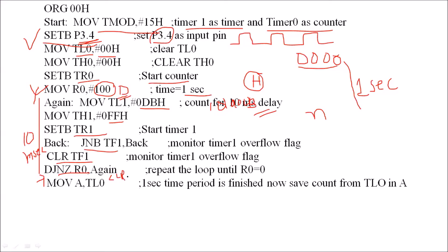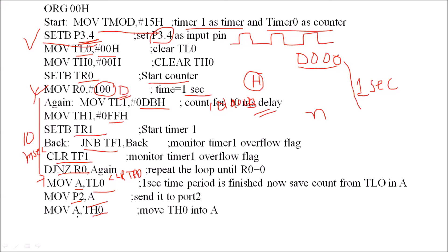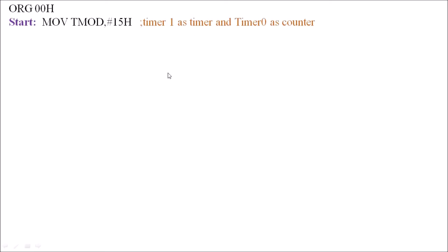After stopping the counter, the count is in TL0 and TH0. We read the count of TL0 into accumulator A and place the accumulator contents on port P2. Then we read TH0 into the accumulator and place it on port P1. To repeat the measurement, write SJMP START, or to stop write SJMP EXIT with label EXIT. Using a subroutine for the delay makes the program cleaner.